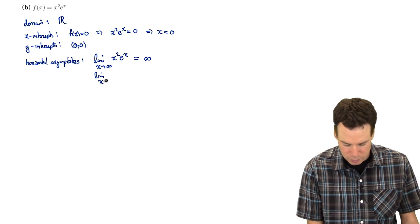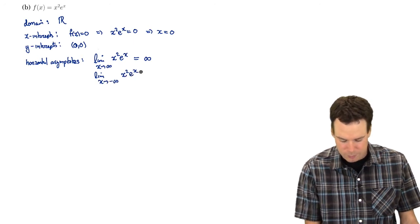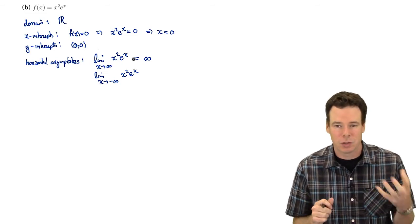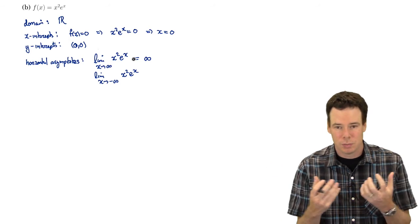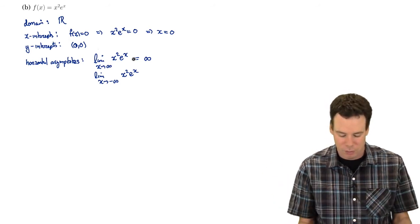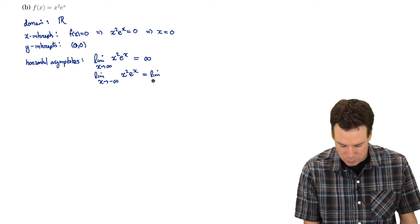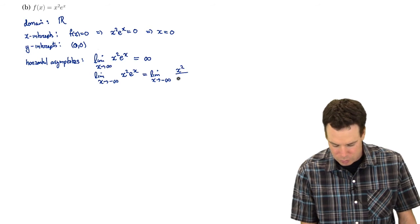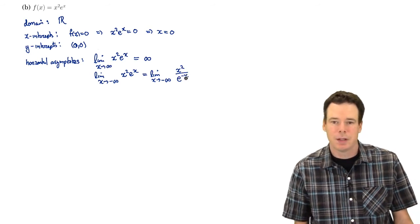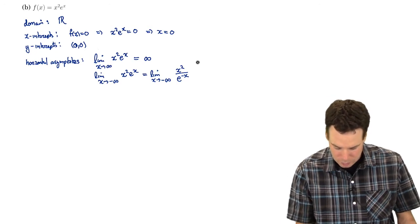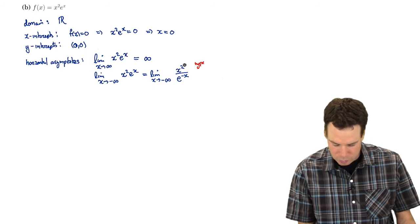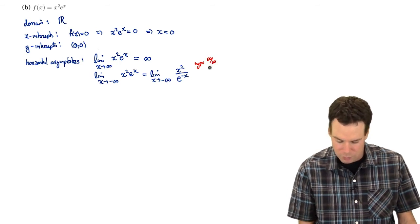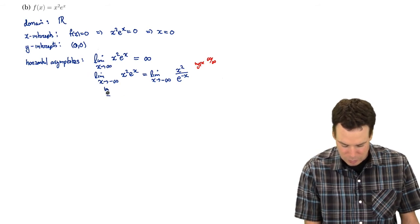What about as we head off towards negative infinity of x²eˣ? As we head towards negative infinity, x² heads off to infinity but eˣ heads to 0 — so we've got a battle going on here. To resolve it, I'll rewrite the expression by bringing eˣ downstairs as e^(−x), giving x²/e^(−x). The top goes to infinity and the bottom e^(−x) as x → −∞ also goes to infinity, so this is of type infinity over infinity — we can use L'Hôpital's rule.